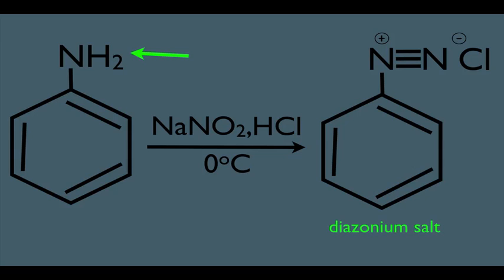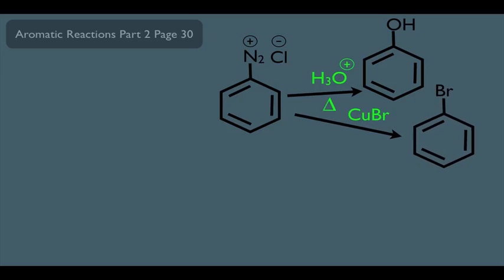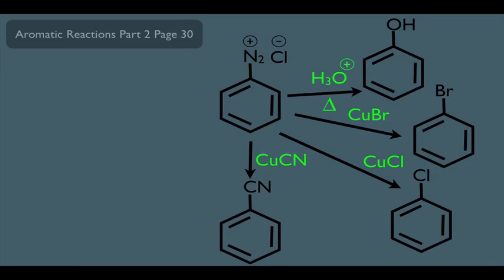Now, let's see what this diazonium salt can do. Watch how many reactions we can perform with this. For instance, we can add H3O+ and heat, and that'll turn the N2Cl into OH. You could also react it with CuBr, and replace it with a Br. You could also react it with CuCl, and that'll put a Cl on the benzene ring. And you could also use CuCN, which will put a nitrile on a benzene ring. Together, these reactions are called the Sandmeyer reactions.